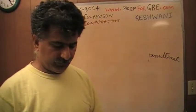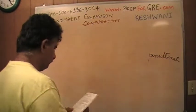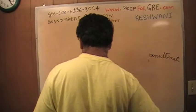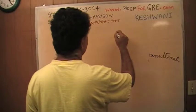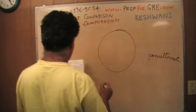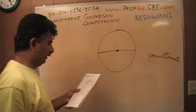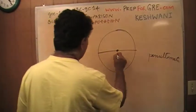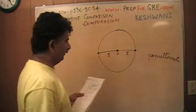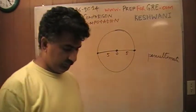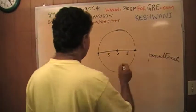They give you a picture of a circle. The circle with center O has a radius of 5. So from here to here is 5, and from here to here is also 5. Or if you wish, the diameter is 10. They also give you a picture of a small triangle inside.